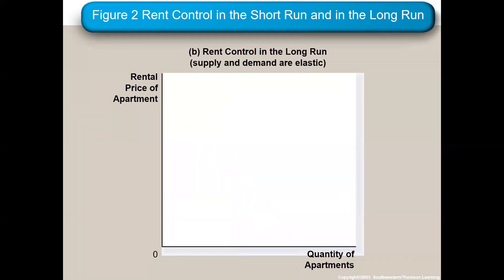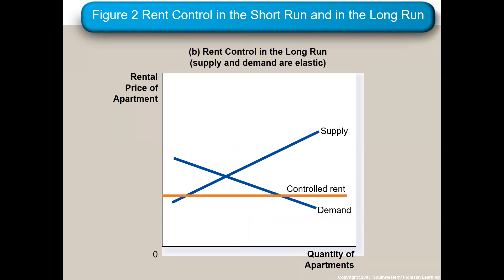Now let's look at rent control and the price ceiling in the long run. Suppliers at this low rent could stop renting out apartments or knock them down. Now everyone who wants this low rent has their leases up and could look for it — and you have this huge shortage. The tendency also is that if the rent is lower, landlords put less into the building; the quality of the building is not taken care of as much, because they're making less money. So there is your shortage in the long run.